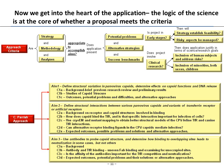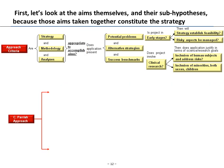Now we get to the heart of the application — the logic of the science — which is core to whether the proposal meets the criteria reviewers want to see: are the strategy, methodology, and analysis appropriate to accomplish the aims? Let's look at the aims themselves and their sub-hypotheses, because those aims taken together constitute an overall strategy.